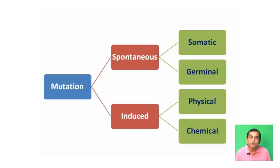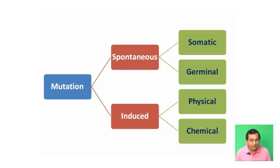Mutations produced in somatic cells are called somatic mutations, and those in germinal cells are called germinal mutations. Mutation could be induced by physical and chemical agents. Physical agents include X-ray, gamma ray, cosmic ray, etc.